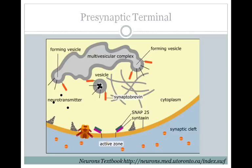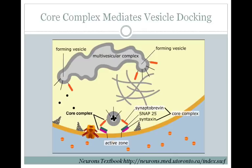Synaptic vesicles are formed in the presynaptic terminal, or bouton. The synaptic vesicles are pinched off of the multivesicular complex. These vesicles have two important proteins, synaptobrevin and synaptotagmin, and are loaded with neurotransmitter. These vesicles then move to the active zone, where the core complex is formed, which allows the vesicles to dock in the active zone and get ready for the signal to release neurotransmitter. The three important proteins that form this core complex are synaptobrevin on the vesicle itself, and SNAP25 and syntaxin on the active zone membrane.